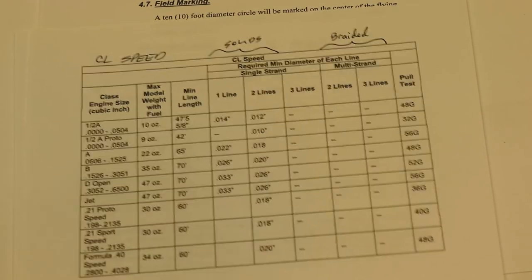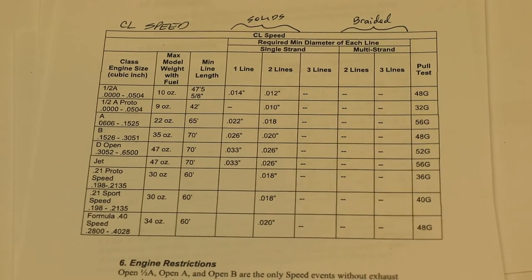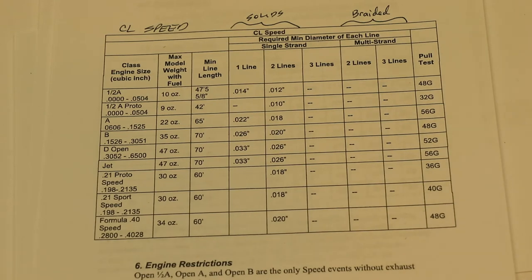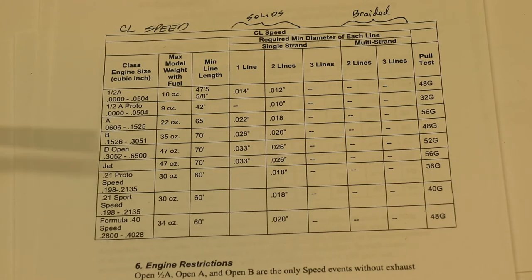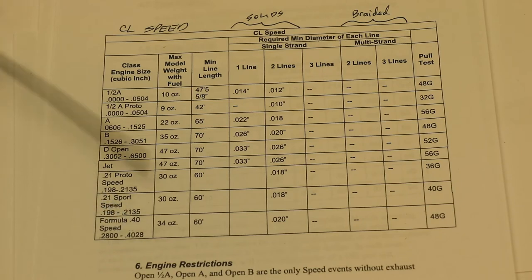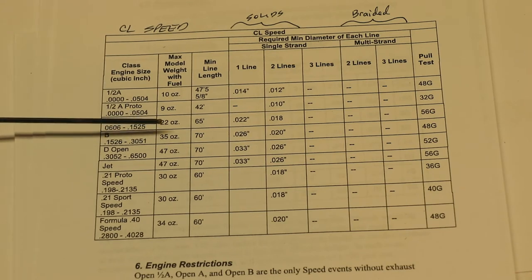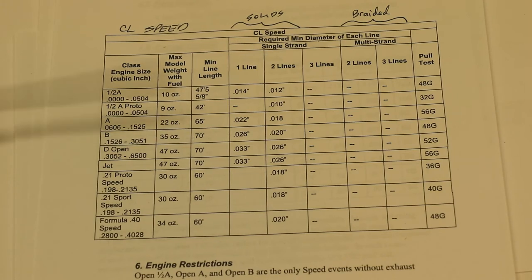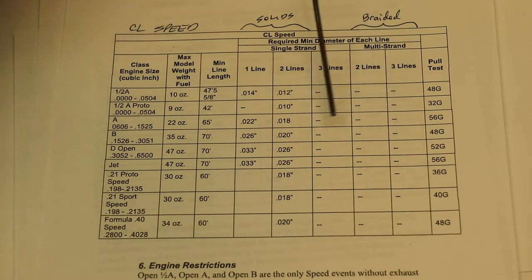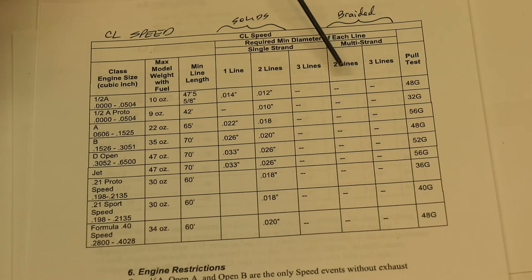Now control line speed they listed by the event category they have the maximum model weight with fuel so you can't weigh any more than this when you're flying. Now they list a minimum line length because as you shorten the lines you're going faster so you have to be at a minimum for let's take for example B speed you have to be at a minimum of 70 feet. Notice that they do not even list diameters for braided lines in speed so they're essentially requiring that you use solids single strand.